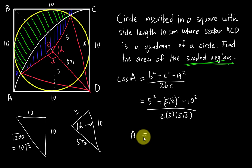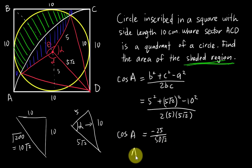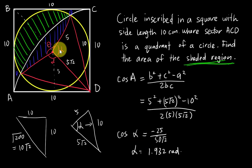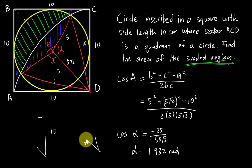Using the calculator: the numerator is −25, the denominator is 50√2. Dividing gives the cosine value, then applying inverse cosine (shift cos) gives α = 1.932 radians. This is our alpha — note: make sure your calculator is in radian mode.